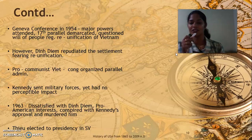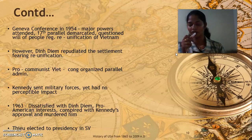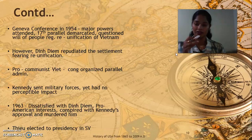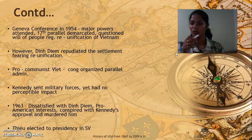However, Diem repudiated the settlement fearing reunification. Diem was the new leader who came to charge in South Vietnam. He didn't want to unite Vietnam because reunification would mean losing his position and the whole Vietnam would be transformed into communist Vietnam. When the pro-communist leader sensed Diem's fear, he organized a parallel administration and proposed many compromising plans supporting the South Vietnamese people.